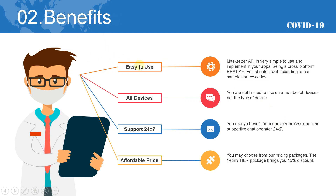Benefits: Maskarizer API is very simple to use and implement in your apps. Being a cross-platform REST API, you should use it according to our sample source codes. You are not limited to a number of devices nor the type of device. You always benefit from our very professional and supportive chat operator 24/7. You may choose from our pricing packages — the yearly tier package brings you a 15% discount.